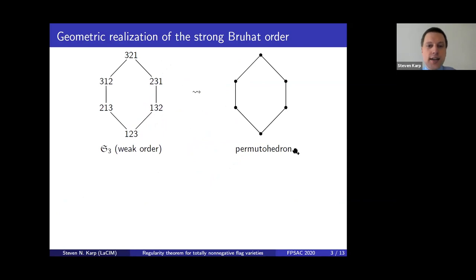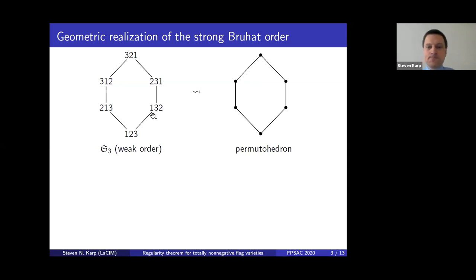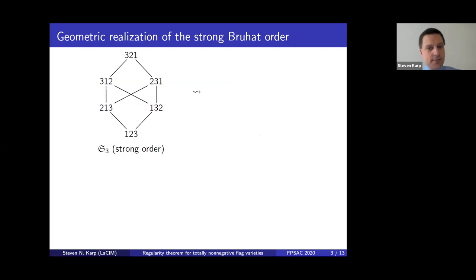Here's the picture for n equals 3. We have the Hasse diagram of the weak Bruhat order on the symmetric group, and here we have the permutahedron, which we can think of as a geometric realization of this poset, in the sense that the vertices and edges over here correspond to the vertices and edges in this Hasse diagram. Now there's another nice poset structure on the symmetric group called the strong Bruhat order, and we could ask: can we find a geometric realization of this poset?